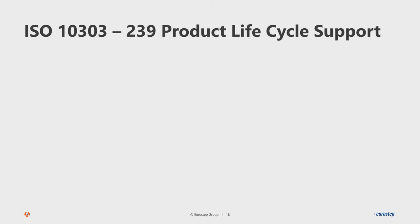ISO 10303-239, also called Product Lifecycle Support or abbreviated as PLCS, also known as AP 239, is part of the STEP family of standards, which contains other standards such as AP 214 for CAD and CAM, and more recently the common AP 242. This is an overview of the AP 239 standard — we will not go into much detail, but will present the important concepts.